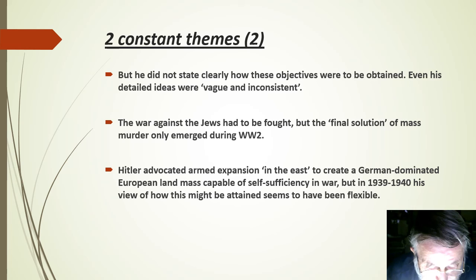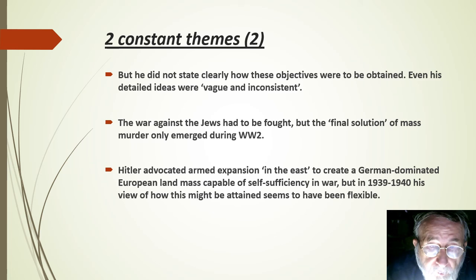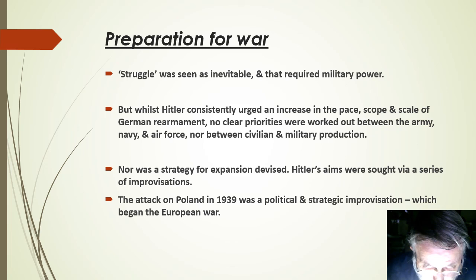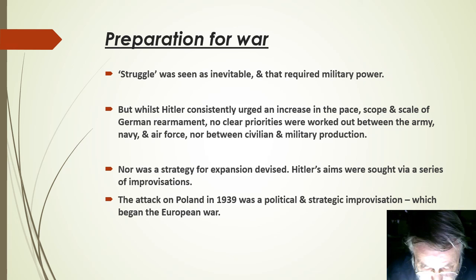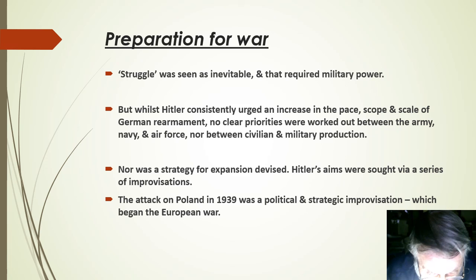Certainly Ribbentrop, Hitler's foreign minister, was allowed to work on these lines. By the end of 1940, however, Hitler had decided to conquer Russia and to exploit both Russia and Poland for Germany's living space. Struggle was seen as inevitable, and that required military power. Thus, before 1939, Hitler consistently urged an increase in the pace, scope and scale of German rearmament. He even put his thoughts into writing in August 1936 — a rare event after 1933. The German economy, he wrote, must be ready for war in four years' time. But no priorities were ever worked out between the army, the navy and the air force, nor between civilian and military production, nor was a strategy for expansion devised. As elsewhere, Hitler's aims were sought via a series of improvisations.